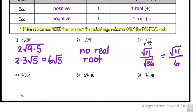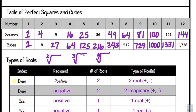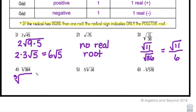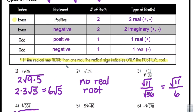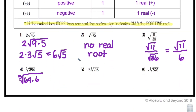Number four: I have the cubed root. It's positive, so I have one positive real solution. I'm looking for the largest perfect cube that will go into 384, and I find that 64 goes into it — meaning 64 times 6. The cubed root of 64 is 4, so 4 comes out, and I'm left with the cubed root of 6 inside. The answer is 4∛6.